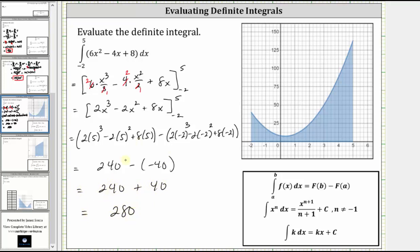And again, because the function is non-negative over this closed interval, the shaded area here on the graph is equal to exactly 280 square units.